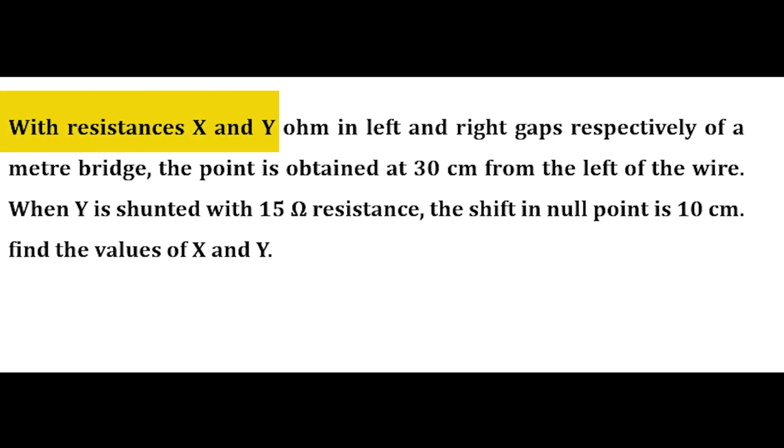With resistances X and Y ohm in left and right gaps respectively of a meter bridge, the point is obtained at 30 cm from the left of the wire. When Y is shunted with 15 ohm resistance, the shift in null point is 10 cm. Find the values of X and Y.